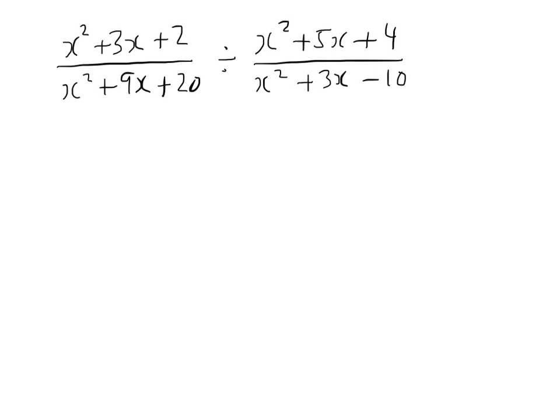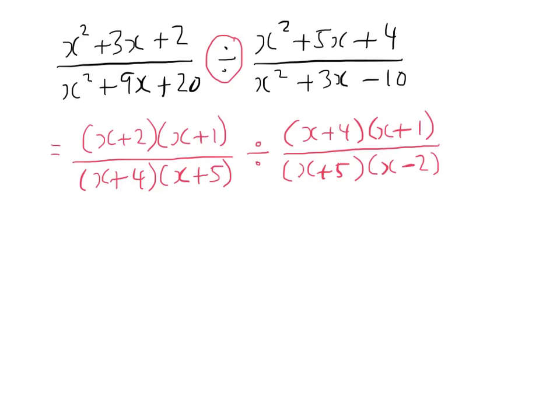So, let's look at another slightly harder example, and the key to this is be methodical. Number 1, factorise wherever you can, and number 2, think of the normal rules of fraction multiplication, addition, division, and subtraction. So, step 1 then, factorise. So, I've got, for my first fraction, I've got x plus 2 times x plus 1 over x plus 4 times x plus 5, and this whole thing is divided by the fraction x plus 4 times x plus 1 over x plus 5 over x minus 2.